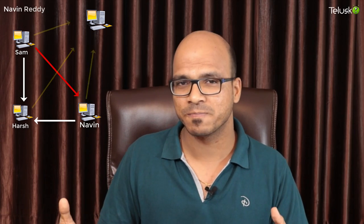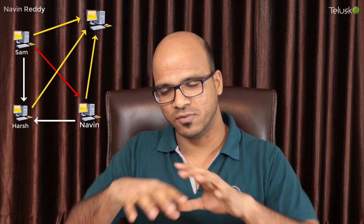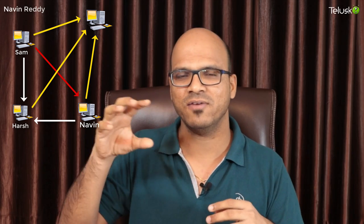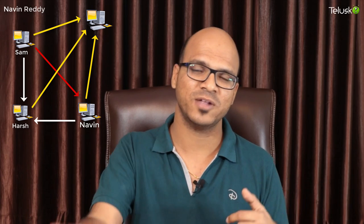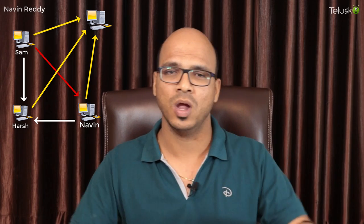Let's say I have a friend named Sam. Sam has a file. The moment I download that file, instead of only Sam being an uploader, I can also be an uploader. Now if someone else, like Harsh, wants that file, Harsh can download the same file from Sam and from Naveen. The same file is then with three people. A fourth person can download the file from those three people, getting different chunks — one part from Sam, one from Naveen, and one from Harsh. That's how torrent works.